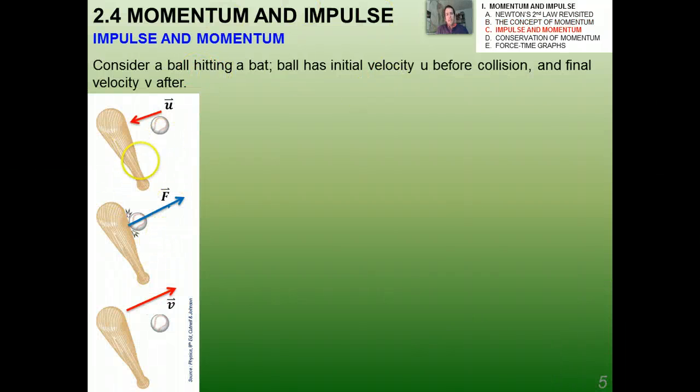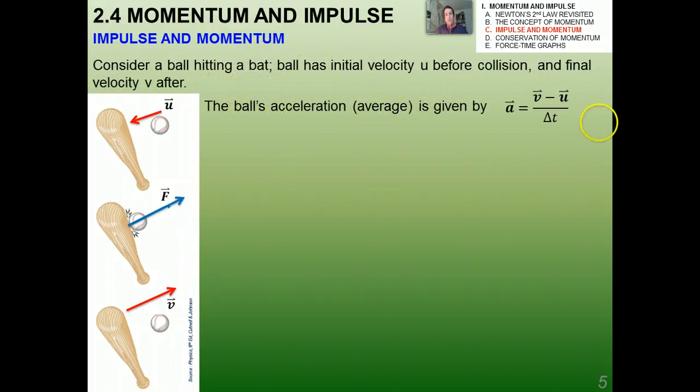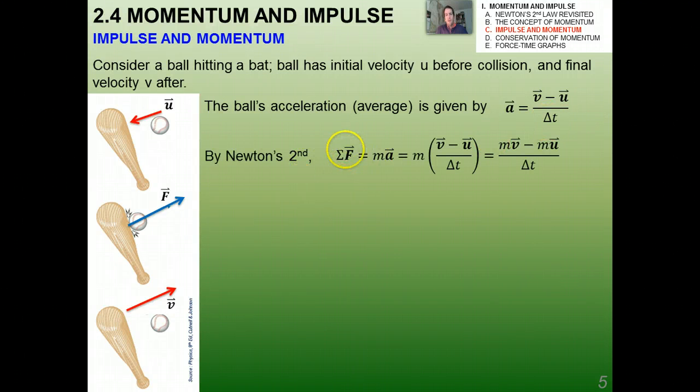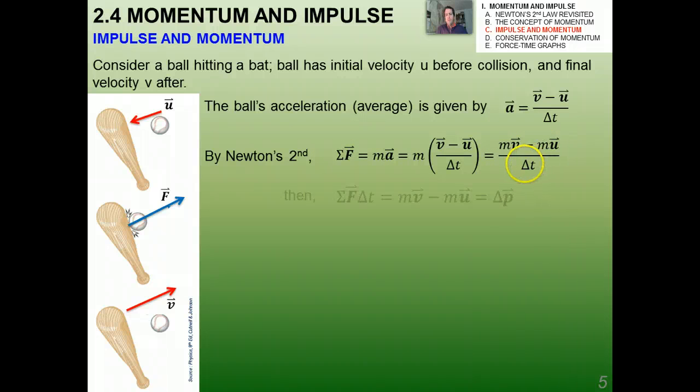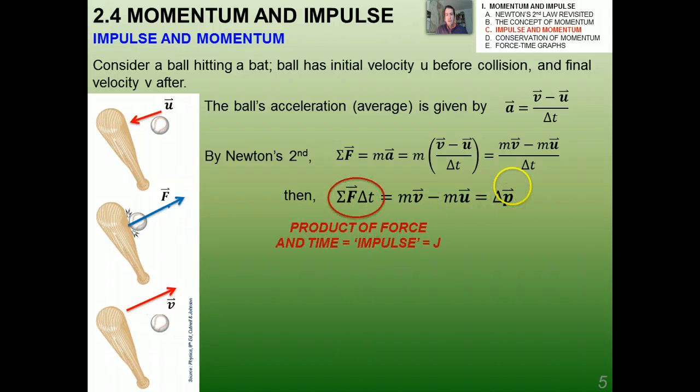Consider the case of hitting a baseball with a bat. The ball has an initial velocity of u before the collision and a final velocity of v afterwards. Usually v is greater than u in terms of magnitude because the batter swings the bat, and the ball goes very far. The ball's acceleration, the average acceleration, is given by the change in velocity over the change in time. By Newton's second law, the sum of all forces equals F equals ma. I'm going to substitute this value of a, v minus u over delta t. I get that F equals mv minus mu all over delta t. If I multiply both sides by delta t, I get that F times t equals mv minus mu, which is the change in momentum. It's just another way of fiddling with Newton's second law, but this expression is actually very important, and it deals with something called the impulse momentum theorem.